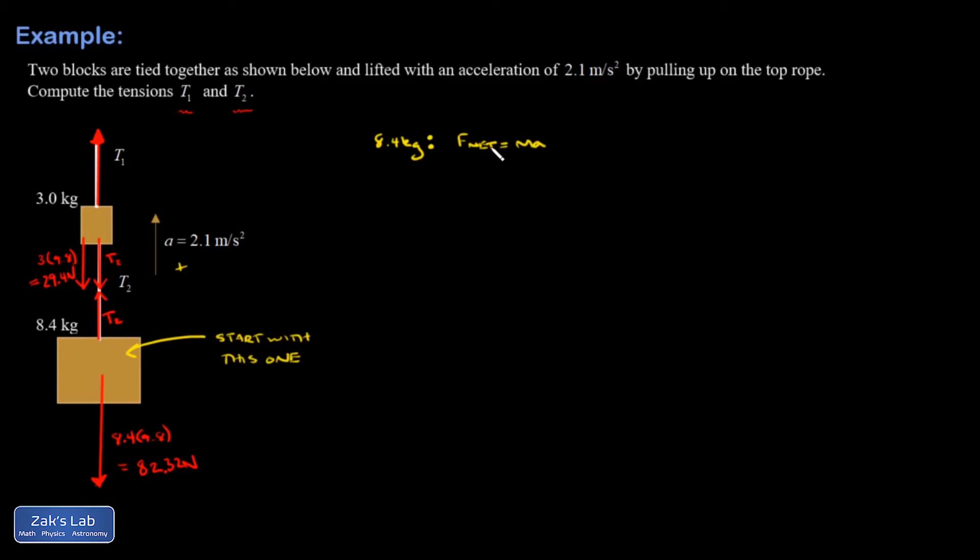F net is going to be T2 minus 82.32 newtons. That's going to equal ma, so 8.4 kilograms times 2.1 meters per second squared. I'll solve for T2 by adding that 82.32 to the right hand side.